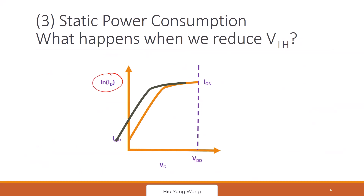On the scale of Id versus Vg, do you remember what we call this slope? Although we've already done midterm one, I still think this is very important — not just for device people. Every circuit designer should know this concept. What is this slope? Sub-threshold slope. Can you tell me the definition? It is 60 millivolts per decade — how much change in gate voltage you need to increase the drain current by 10 times.